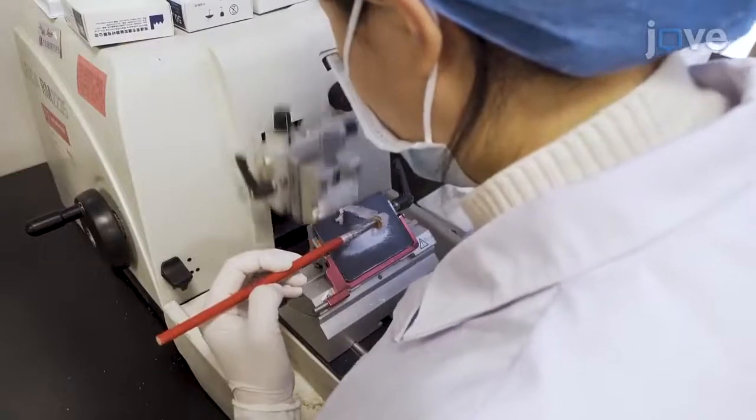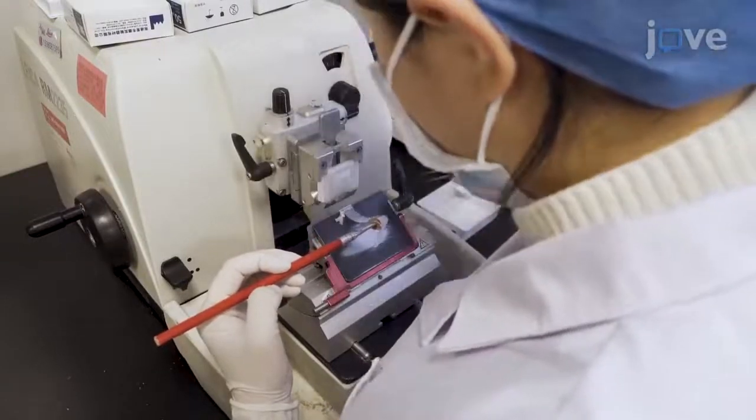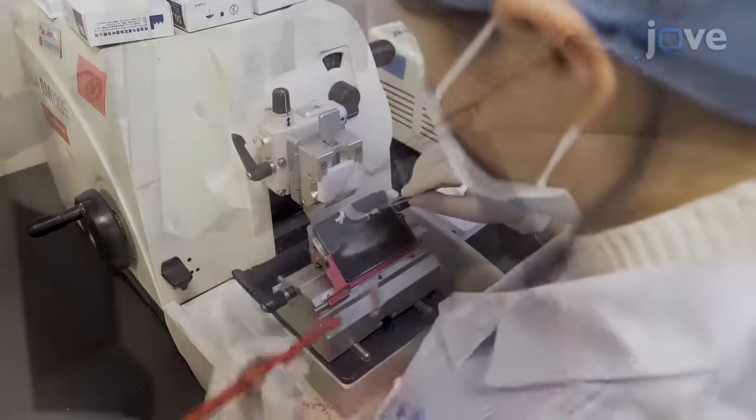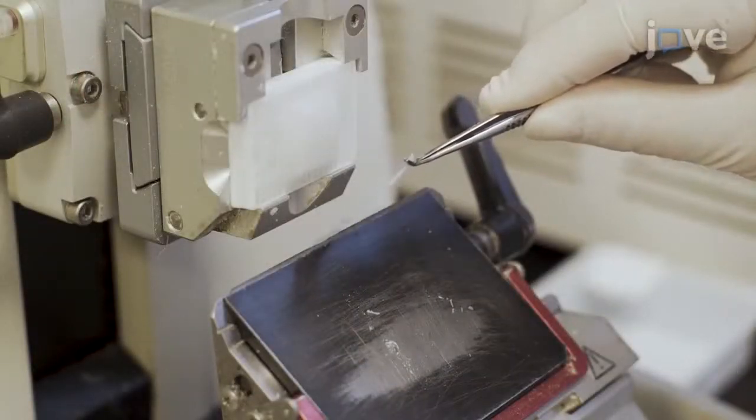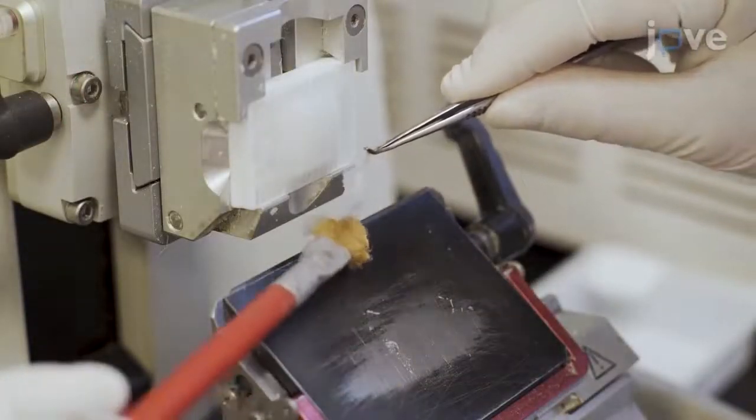Trim the blocks on a microtome until a complete section plane of the tissue is exposed, then use the microtome to obtain 0.4 micrometer sections of the embedded tissue.